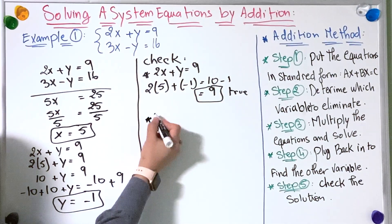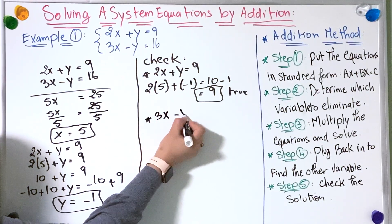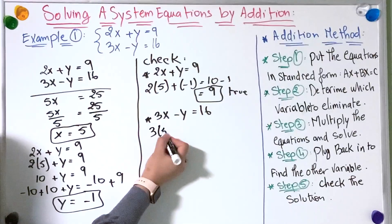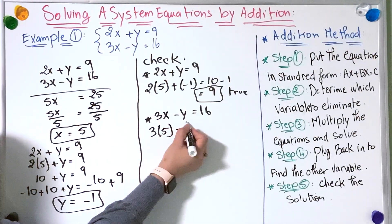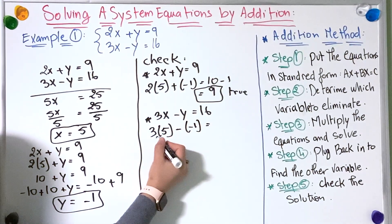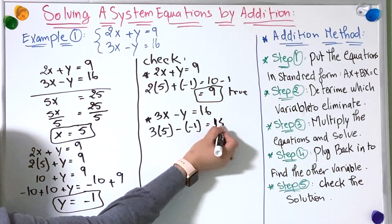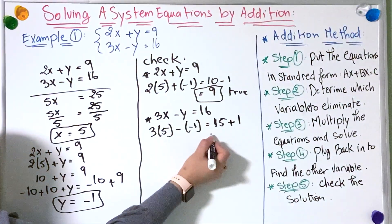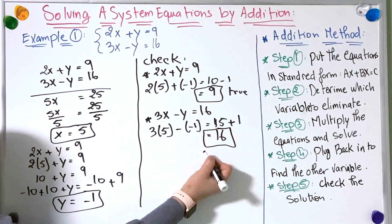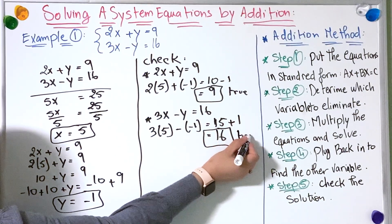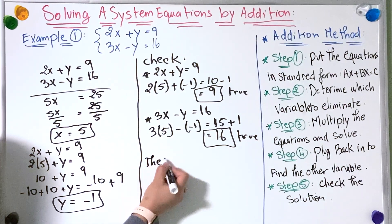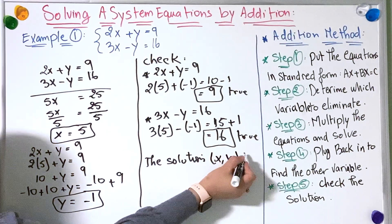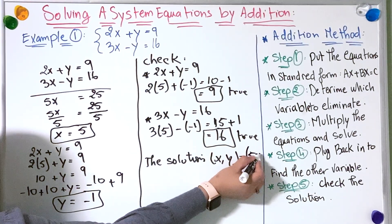Now moving to the second equation: 3x minus y equals 16. Replacing x and y: 3 multiplied by 5 minus minus 1. That gives 15 plus 1, which equals 16. This is true too. So the solution is (x, y) equals (5, -1).